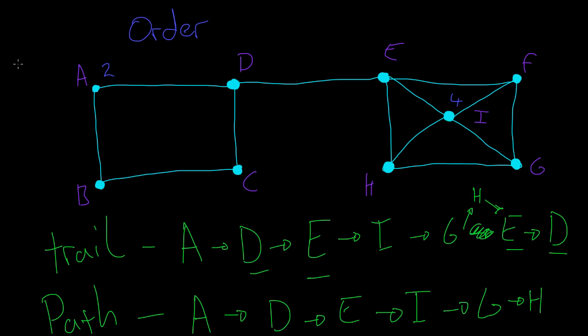Another thing that we can take note of is whether a graph is connected or not. This graph at the moment is connected. I can get from any node to any other node by following a trail. I can get from A to G just by going through A, D, E, I, G. But let's say I introduce another node, node J. Now this node isn't connected to any of the others by arcs. Now this graph isn't connected because I can't get from A to J or any other node to J because I don't have any arcs.